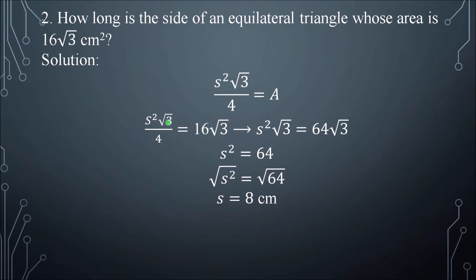Multiply both sides by 4 to remove the 4 in the denominator. So 4 times 16 is 64, and the 4 is removed. Then √3 and √3 can be canceled. What is left is s² = 64. Now get the square root of both sides.